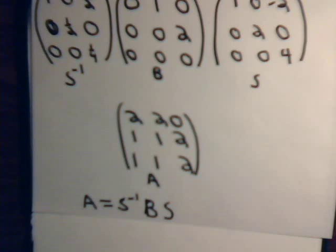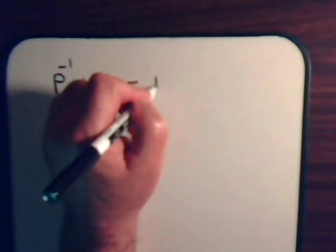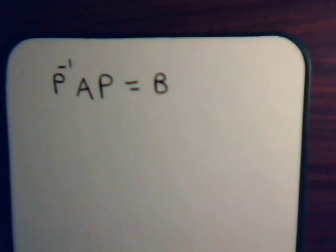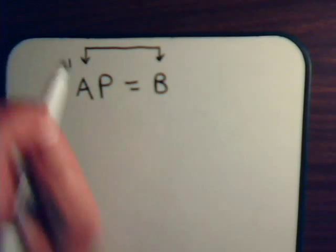What we want to show in this video is that even though A and B do not have the same eigenvectors, matrices A and B do have the same eigenvalues. To do that, let's say we have matrix A multiplied by a non-singular matrix P on its right and its inverse on the left, which gives us matrix B. So A and B are said to be similar to each other.